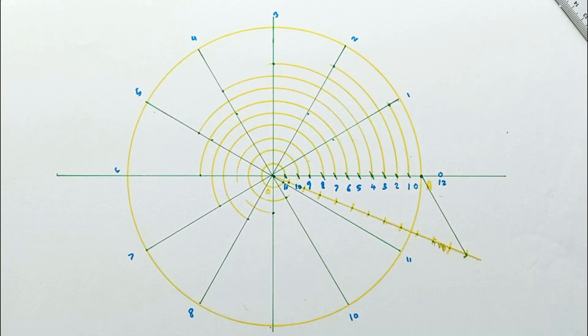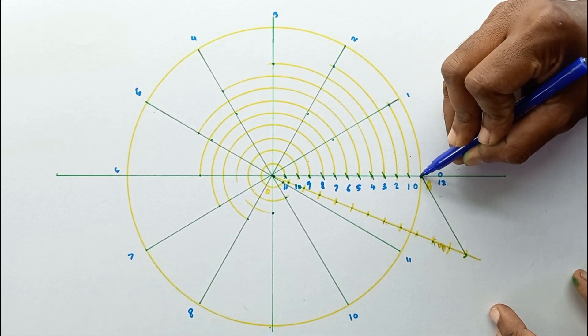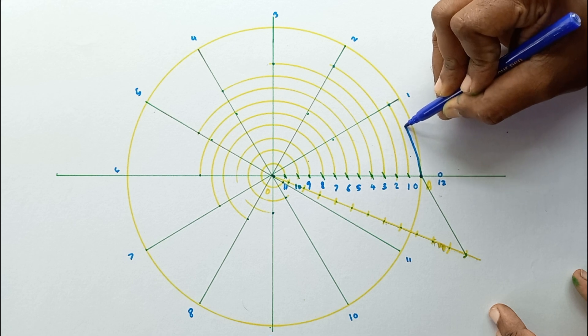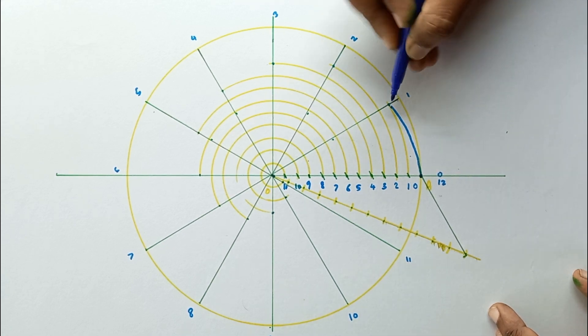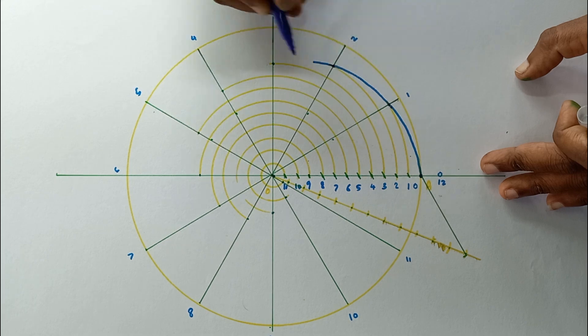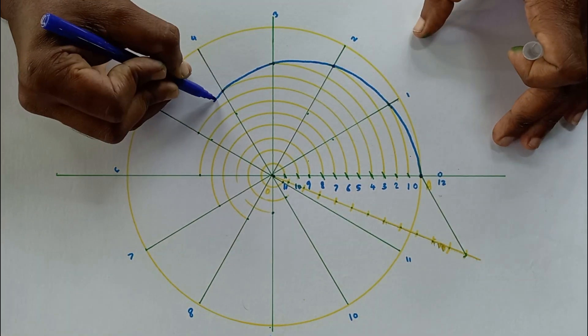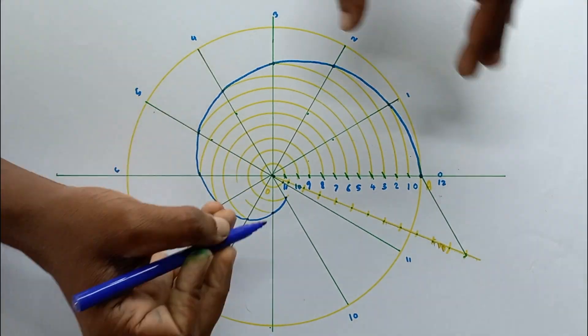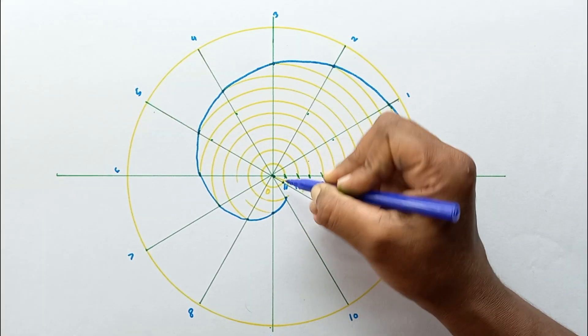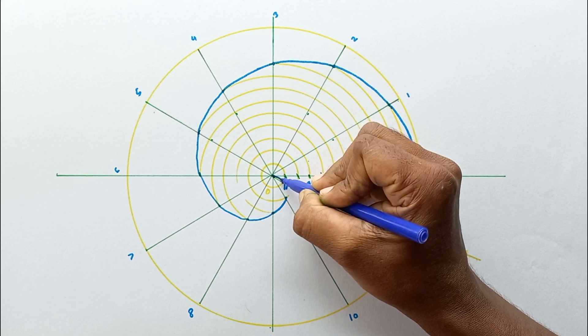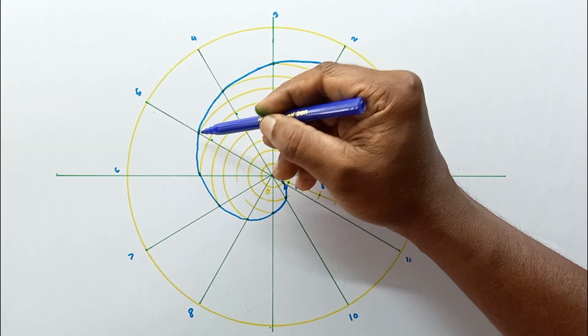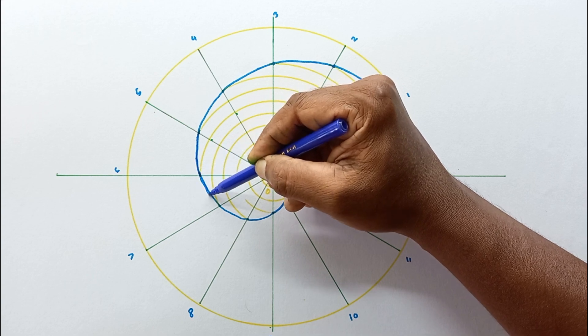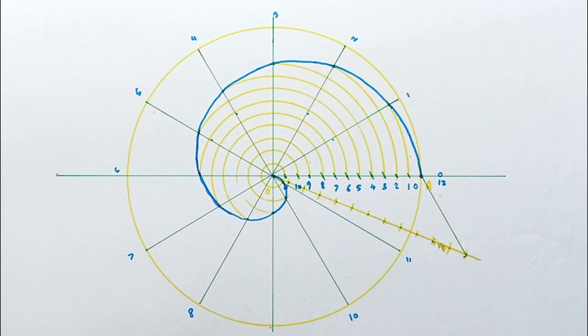Then let's join these points to get the path. This is how we are constructing this kind of Archimedean spiral using geometric constructions. I think you all got a clear idea.